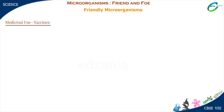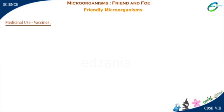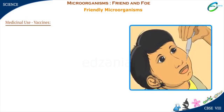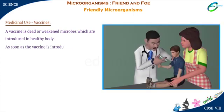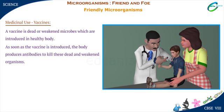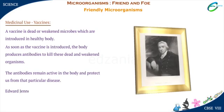Medicinal Uses: Vaccines. Do you know the importance of these two dates in the year 2016 — 17th January and 21st February? Kids who were up to five years old were given the polio vaccine on these dates. A vaccine is dead or weakened microbes which are introduced into a healthy body. As soon as the vaccine is introduced, the body produces antibodies to kill these dead and weakened organisms. The antibodies remain active in the body and protect us from that particular disease. Edward Jenner discovered the first vaccine for smallpox in 1798.